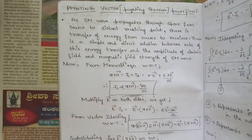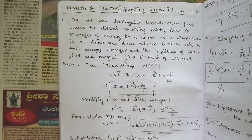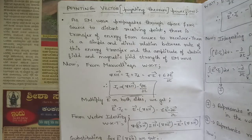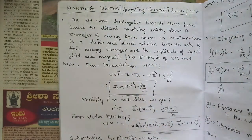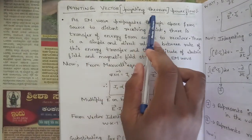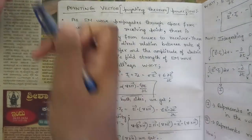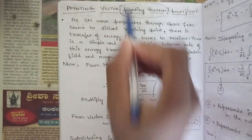Hello everyone, welcome to this new session. In this session we are going to discuss one more important concept from module 5. Those who have not seen the previous videos can first refer those and then watch this one. The topic is the Poynting vector, or Poynting theorem, or power flow — these are different names for the same concept. You can simply remember it as Poynting theorem.